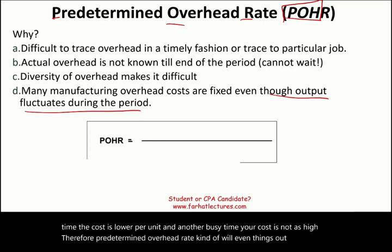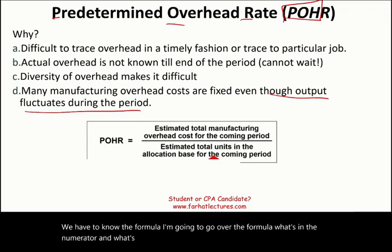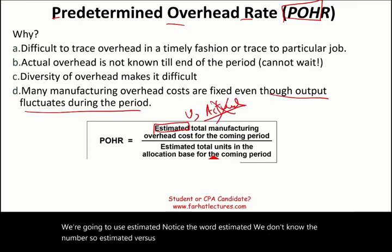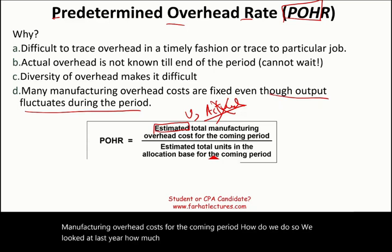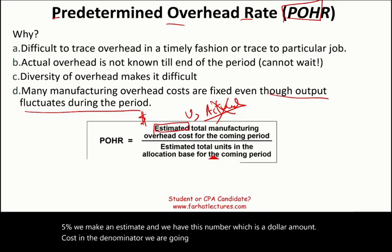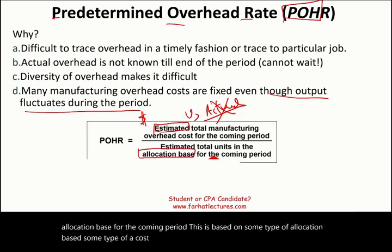How do we compute the predetermined overhead rate? You need to know the formula. We use estimated numbers — notice the word estimated, not actual. We use estimated manufacturing overhead cost for the coming period in the numerator. In the denominator, we estimate the total units of the allocation base for the coming period, based on some type of cost driver. We need to determine what drives our cost.